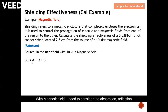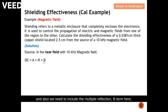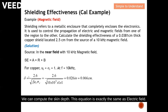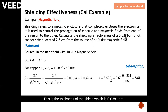For magnetic field, we need to consider absorption, reflection, and also include the multiple reflection B-term. For copper, mu_r and conductivity_r are both equal to 1, and frequency is 10 kilohertz. We compute the skin depth using the same equation as for electric field, getting 0.026 inch or 0.066 centimeter. The absorption loss is calculated using the shield thickness of 0.0381 centimeter, giving an absorption loss of 5 dB.